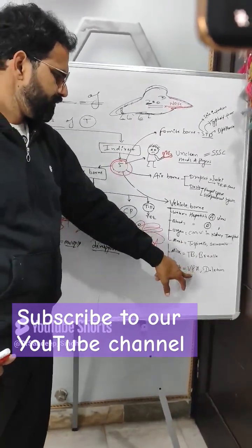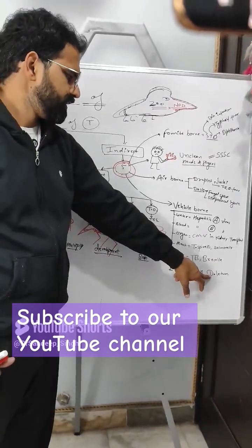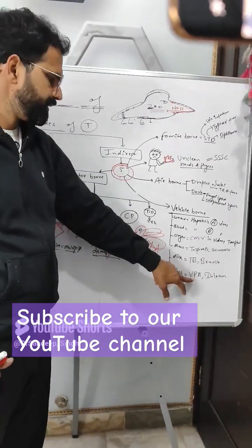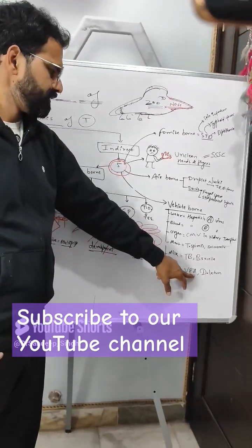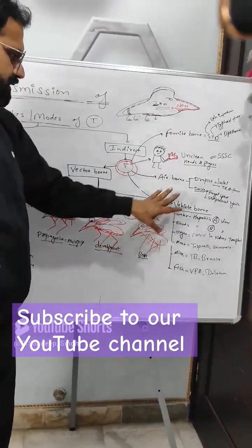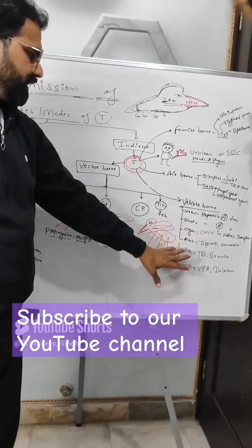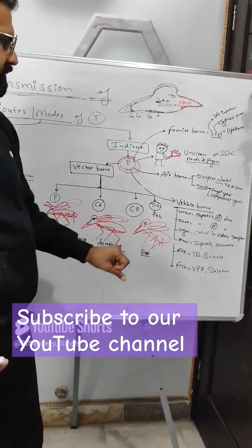For fish: Vibrio parahaemolyticus (VPH) and Diphyllobothrium latum. VPH is Vibrio parahaemolyticus. So these are your vehicle-borne 6 types of mode of transmission.